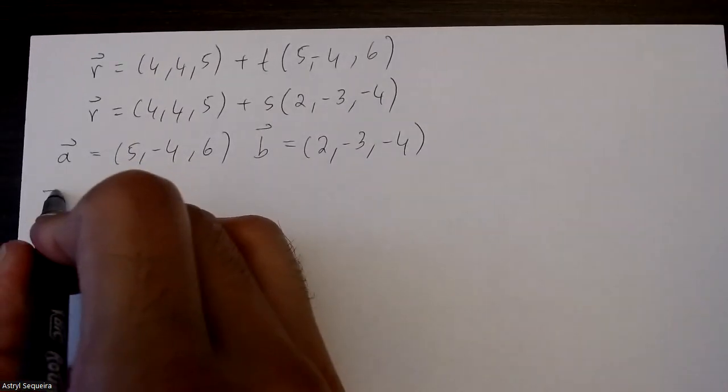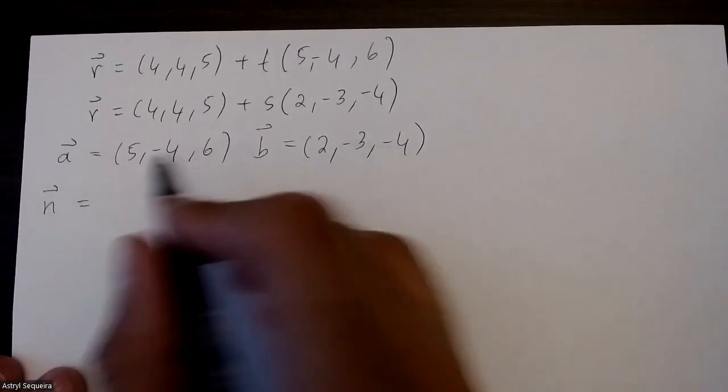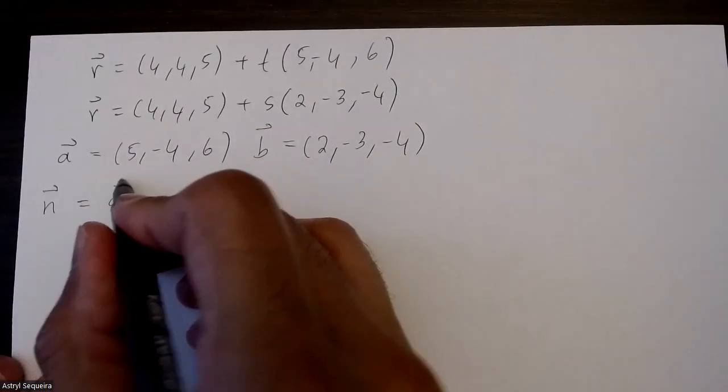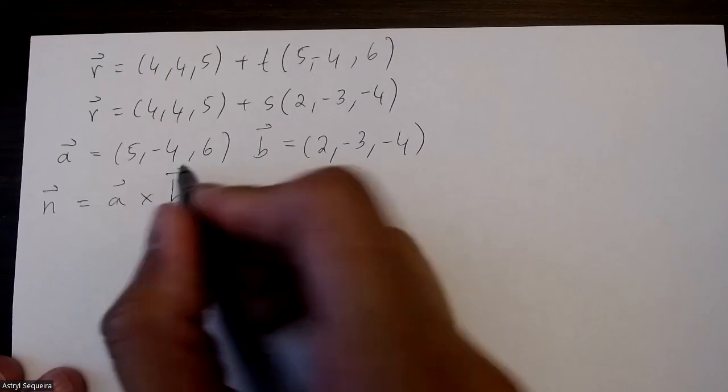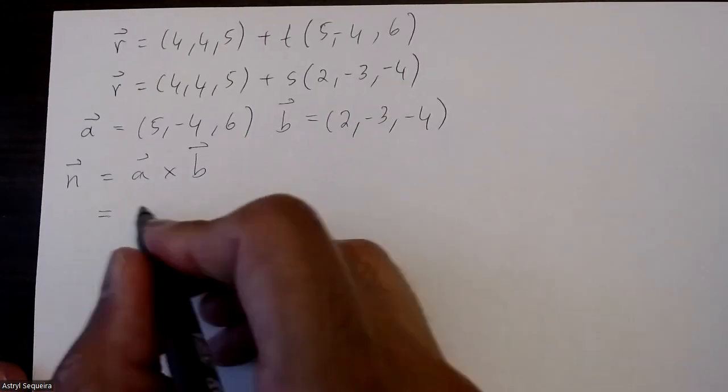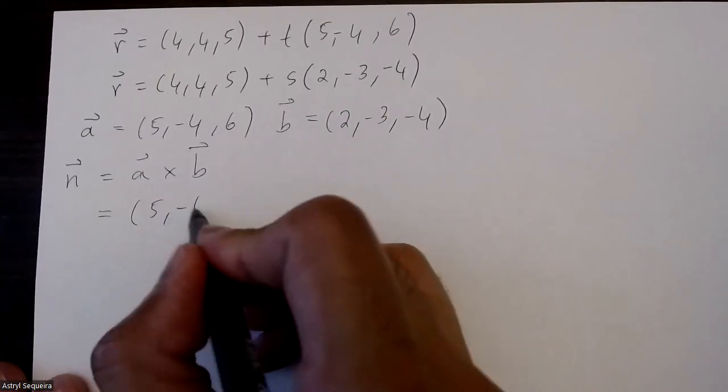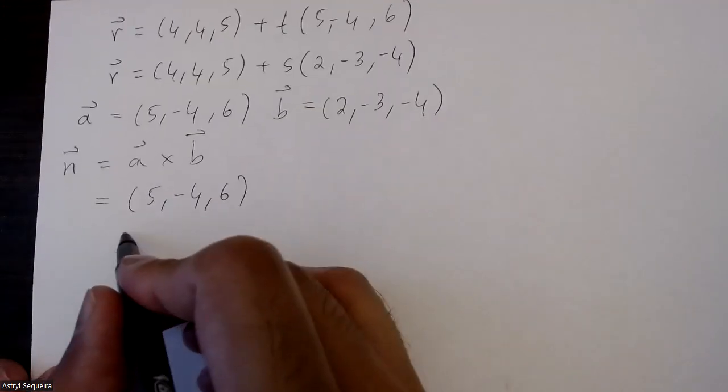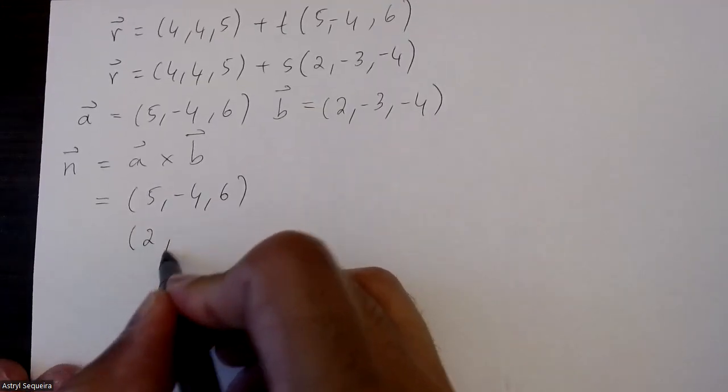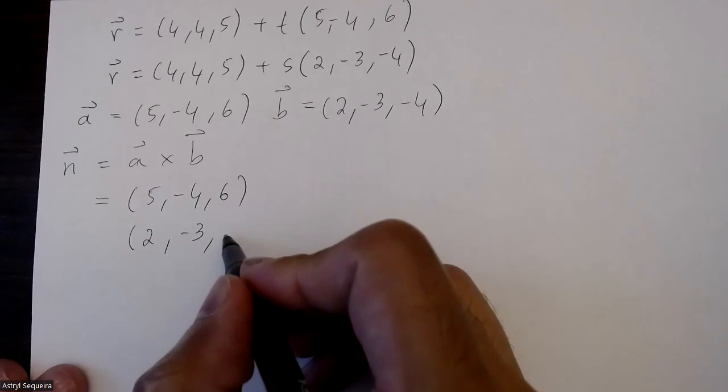Now I know that I want to find my normal vector and I'm going to do that by cross multiplying my two direction vectors. So that's just going to be 5, negative 4, and 6, and I like to write cross multiplication on top of each other. It makes it a bit easier for me to do.